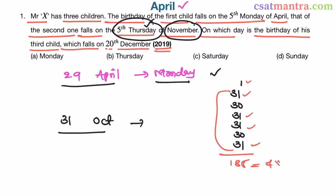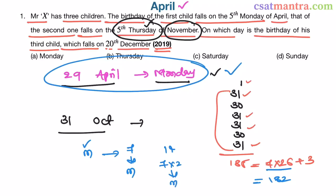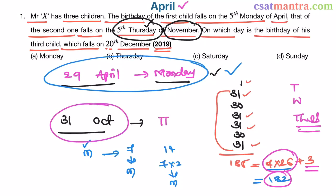185 equals 7 × 26 plus 3, so there are 3 extra days. Since 29th April is Monday, and every multiple of 7 days after a Monday is also Monday, 182 days (7 × 26) after 29th April is also Monday. Then 3 more days: Tuesday, Wednesday, Thursday. So 31st October is Thursday.